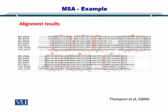The alignment results shown here list the globin proteins with their sequences. The regions that are aligned as consensus sequences are shown in red, while the other portions are left out. This is the multiple sequence alignment result using the progressive approach.